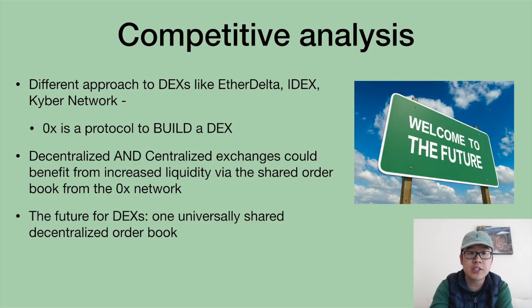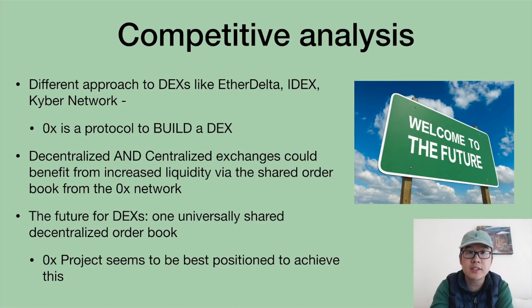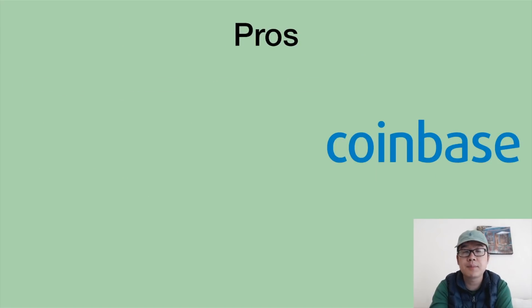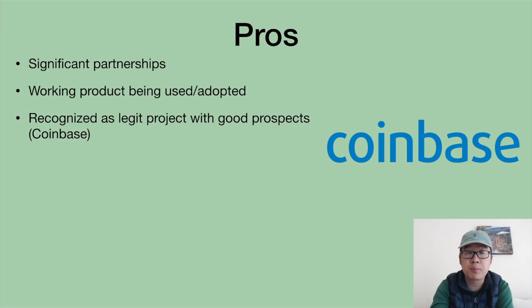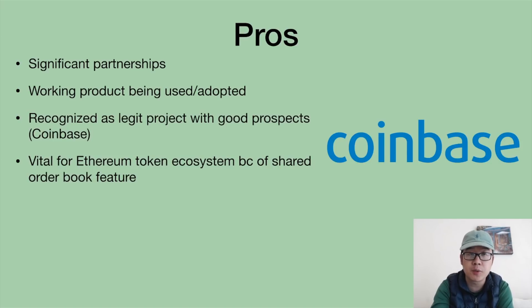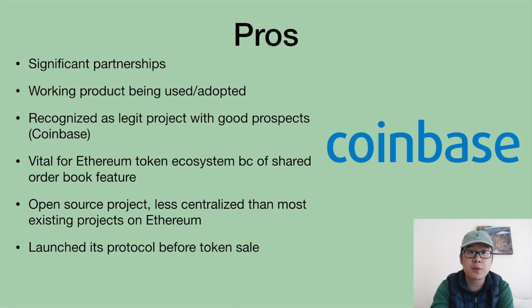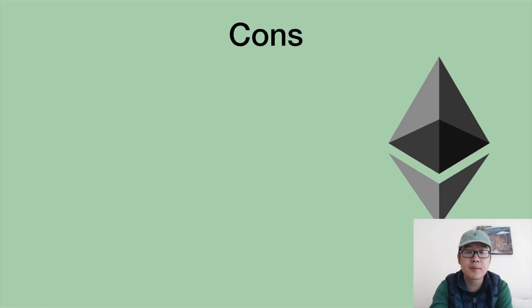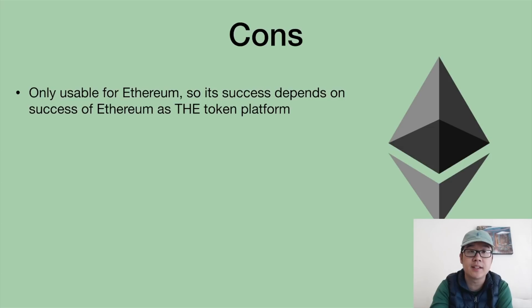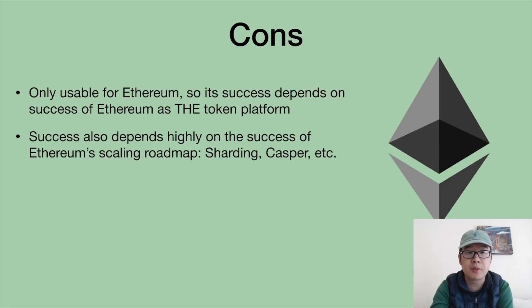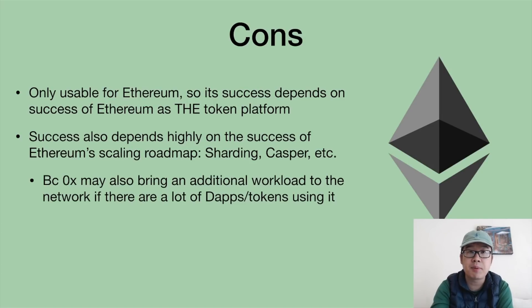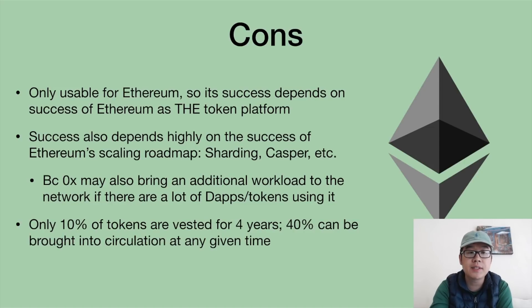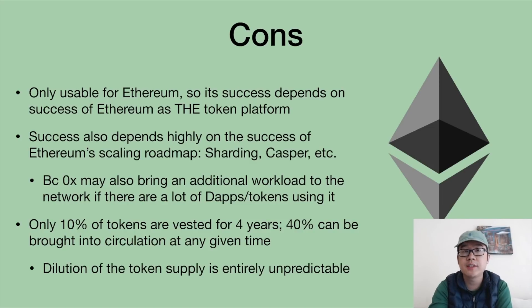Looking at the future of decentralized exchanges, one universally shared decentralized order book seems to be the direction, and the 0x project is well-positioned to capitalize on that. Pros: lots of partnerships, a working product, recognized as a legitimate project (hence the Coinbase listing), vital for the Ethereum token ecosystem, open source and less centralized, launched the protocol before the token sale, and more tokens and dApps could mean more demand for 0x. Cons: it's only usable for Ethereum, so its success depends heavily on Ethereum's success and its scaling approaches like sharding and Casper. Also, only 10% of their tokens are vested over four years — 40% of the non-ICO allocation can be brought into circulation at any time, making token supply dilution entirely unpredictable.